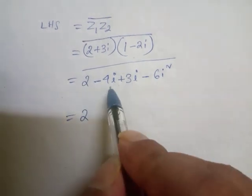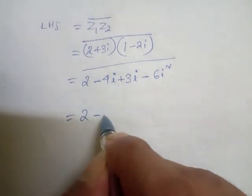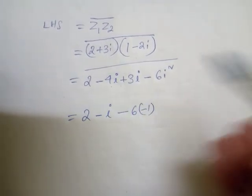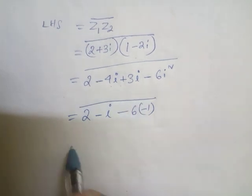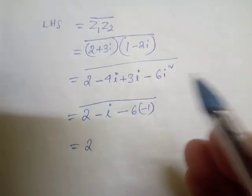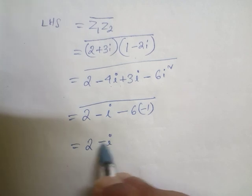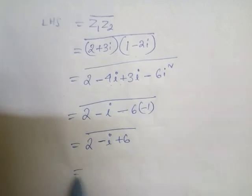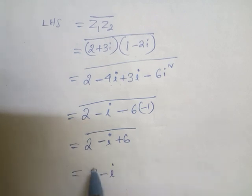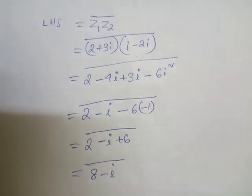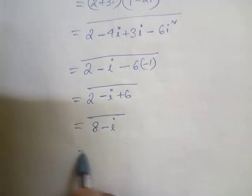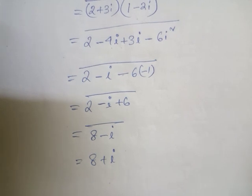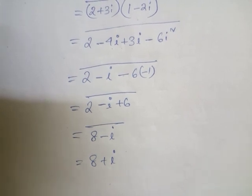Now simplify: 2, then -4i + 3i gives -i, and -6·(-1) gives +6, all under the bar. So we have 6 + 2 = 8, giving (8 - i) under the bar. Taking the conjugate, LHS = 8 + i.